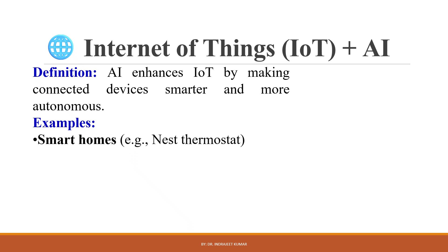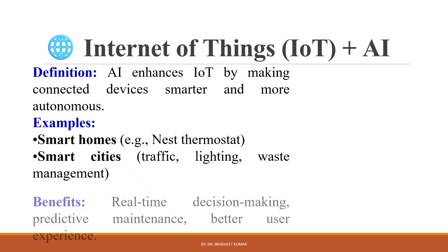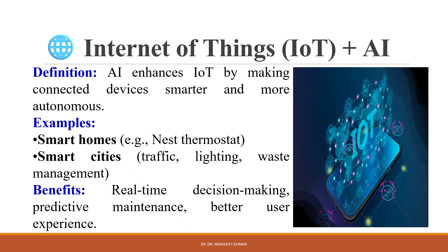In smart cities, traffic cameras and sensors work with AI to reduce traffic jams and manage signals in real time. In smart farming, AI plus IoT sensors check soil moisture and tell the irrigation system when to water crops, saving water and boosting yield. Benefits include real-time decision making, predictive maintenance, and better user experience.